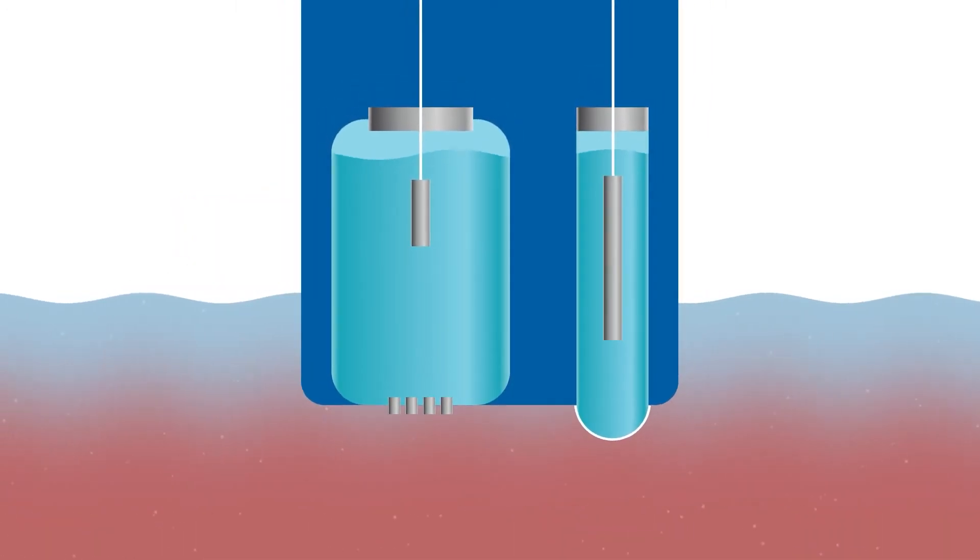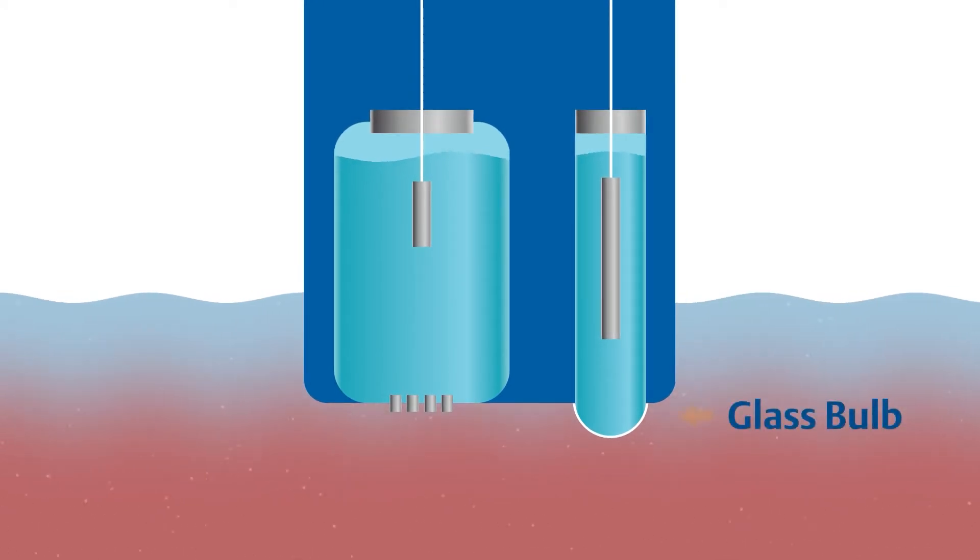The key component of the measuring electrode is a pH-sensitive glass bulb. The electrical voltage across the bulb changes in response to the hydrogen ion concentration of the process fluid around it.